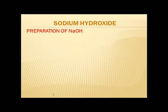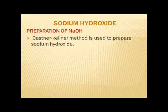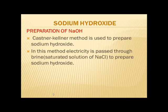For the preparation of sodium hydroxide, the Castner-Kellner method is used. In this method, electricity is passed through a saturated solution of NaCl, also called brine, to form NaOH.